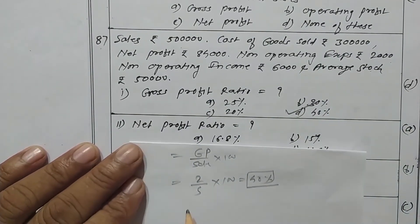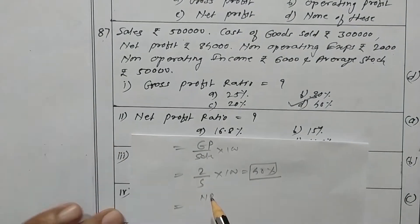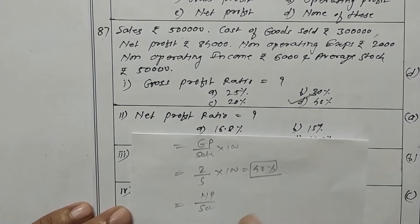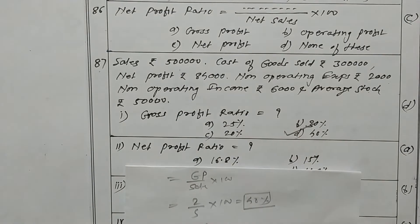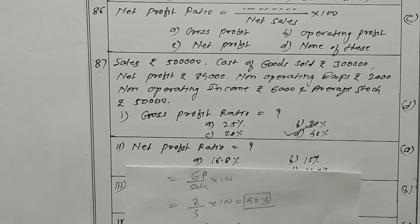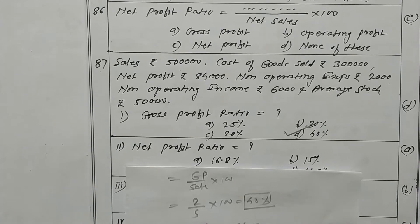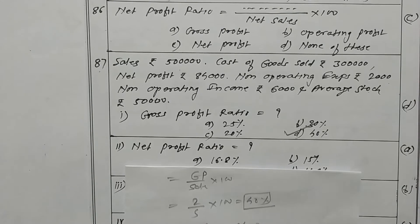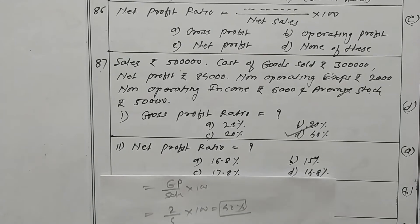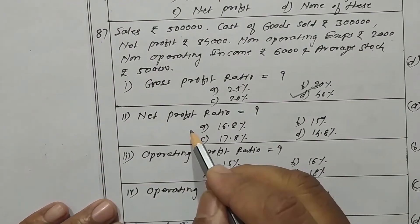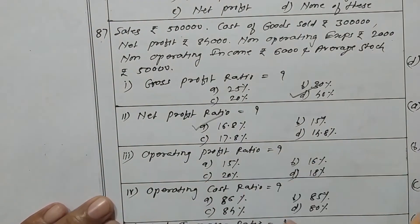Now what is the net profit ratio? NP upon sales into 100. Net profit is 84,000 upon 5 lakhs into 100, giving 16.8 percent. Option A is the correct one.